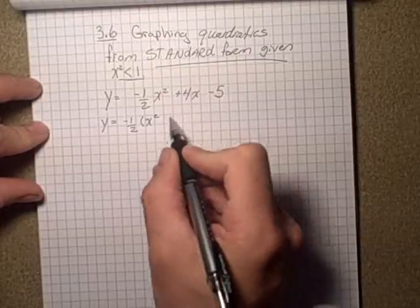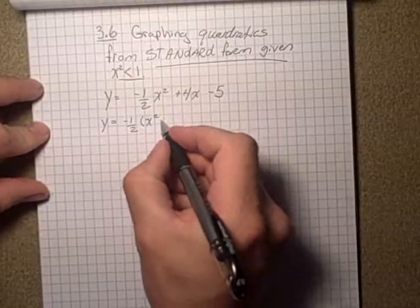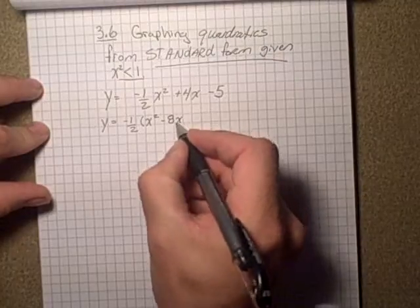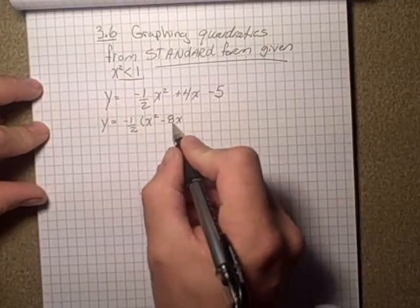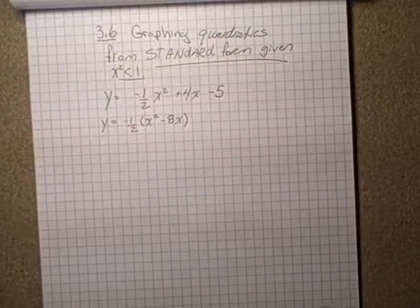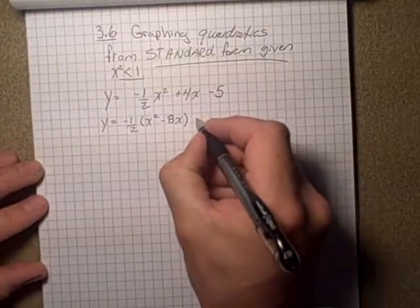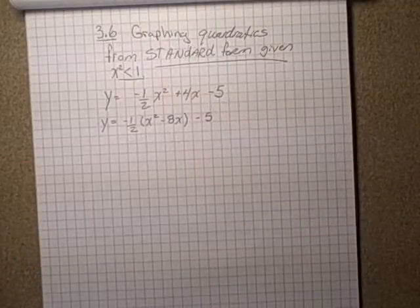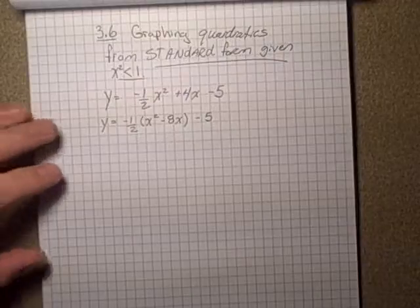What do I need to multiply by to get positive 4 here? Well, I need a negative 8x. If I multiplied negative 8x by negative 1 half, I would get 4x. So that's what I need in there, and then I just leave the negative 5 out here. That's the first step, to take out that factor with the x squared.